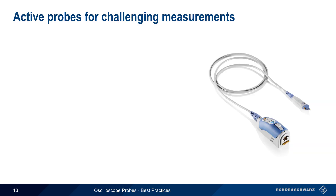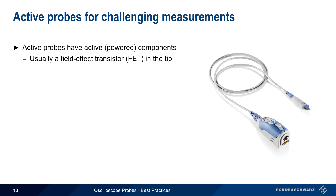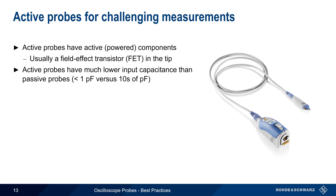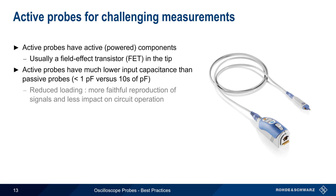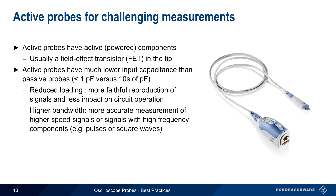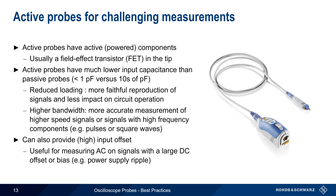Our last probing tip is when to use active probes. As the name implies, active probes have powered components — in this case, a field effect transistor, or FET, in the probe tip. Active probes have much lower input capacitance than passive probes — usually a picofarad or less, compared to tens of picofarads for passive probes. This lower capacitance has two major advantages: reduced circuit loading, which allows for a more faithful reproduction of the measured signal and a lower impact on circuit operation; and higher bandwidth, which is needed for more accurate measurement of higher speed signals and signals with high-frequency components such as square or pulsed waves. In addition, some active probes can apply a relatively large offset to the signal, which is very useful when measuring small AC signals on top of large DC signals, such as power supply ripple. Active probes are therefore an excellent choice for demanding measurement applications.